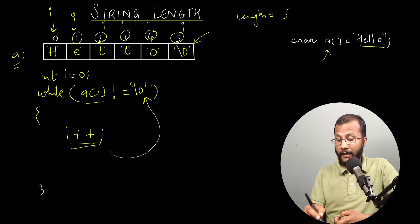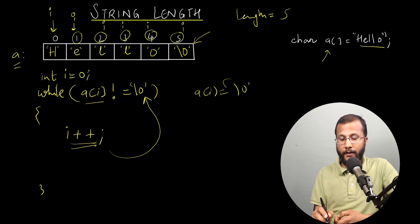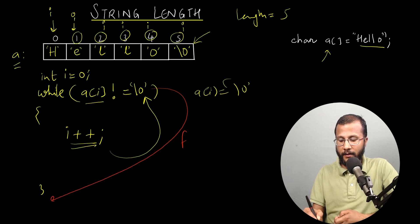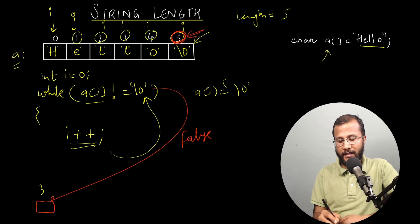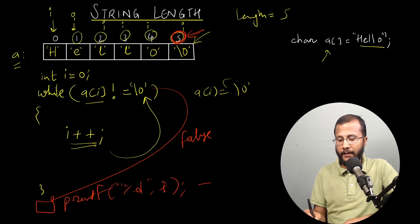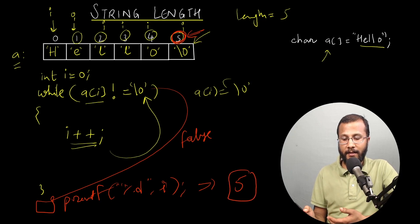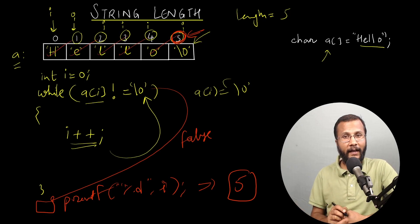Then it checks the condition one more time. When i is five, a[i] is now null. So null is not equal to null is false. Once the condition becomes false, it comes outside of the loop. At this point, the value of i is five — this is my length. So I'll just print the value of i using printf("%d", i), and it will print five, which is the length of this string. This is how you use a while loop to find the length of a given string.